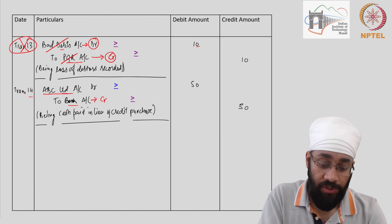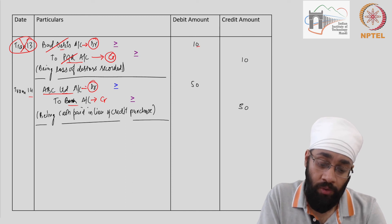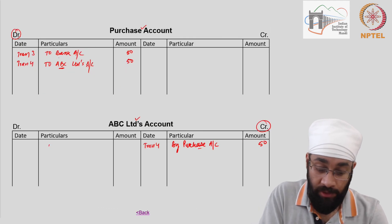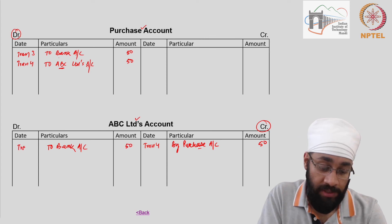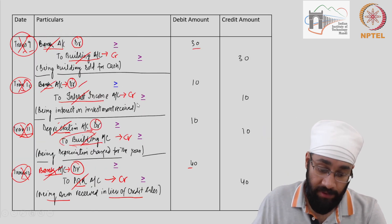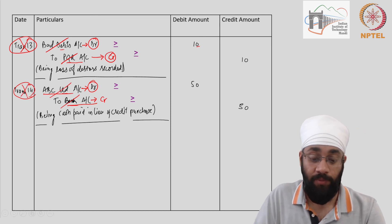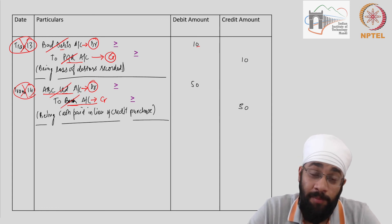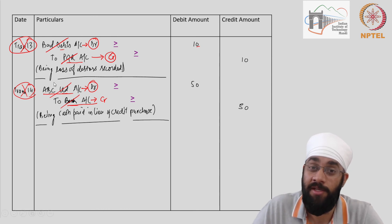Transaction 13 crossed off. Last transaction — transaction 14: ABC Limited's account is being debited. We go to the debit side and write 'To Bank Account, 50', transaction 14. The other account involved — bank account — has already had the entry posted. And there we go — this is the process of ledger posting. This is how transactions are taken to their respective accounts.